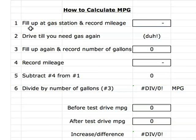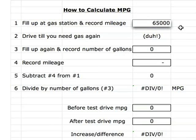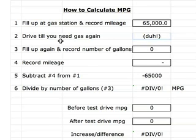For number one, it says that we need to fill up at a gas station and record our mileage. Let's say it says 65,000 miles. Number two says you drive around until you need gas again — kind of a no-brainer. And if you've done this, let's go on to number three.